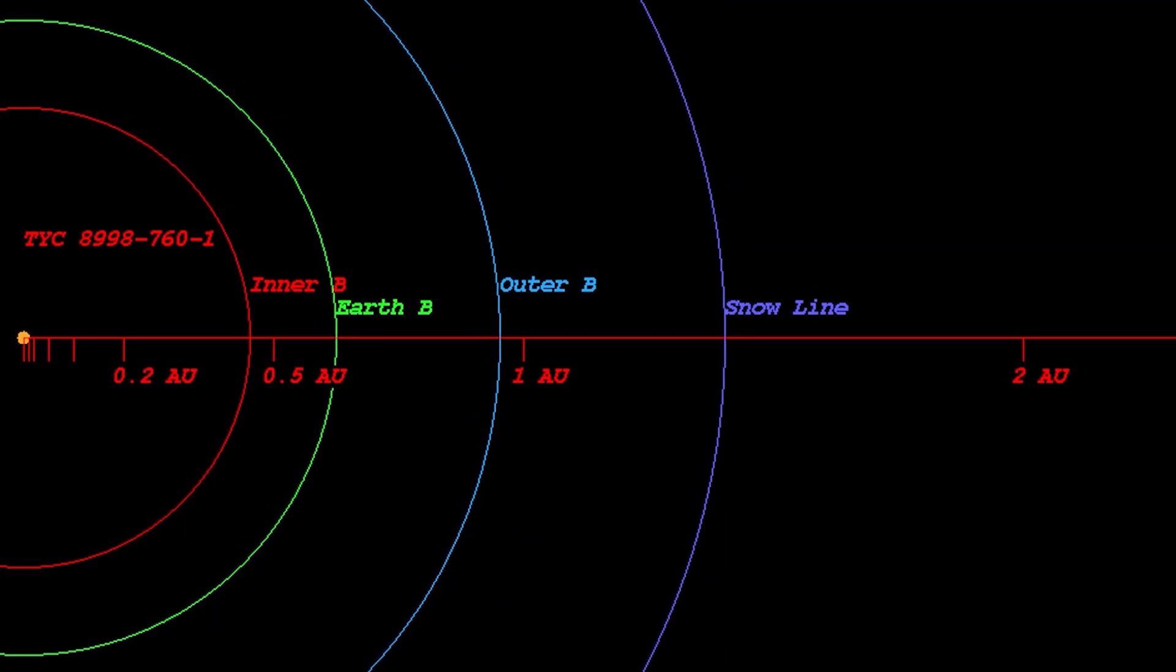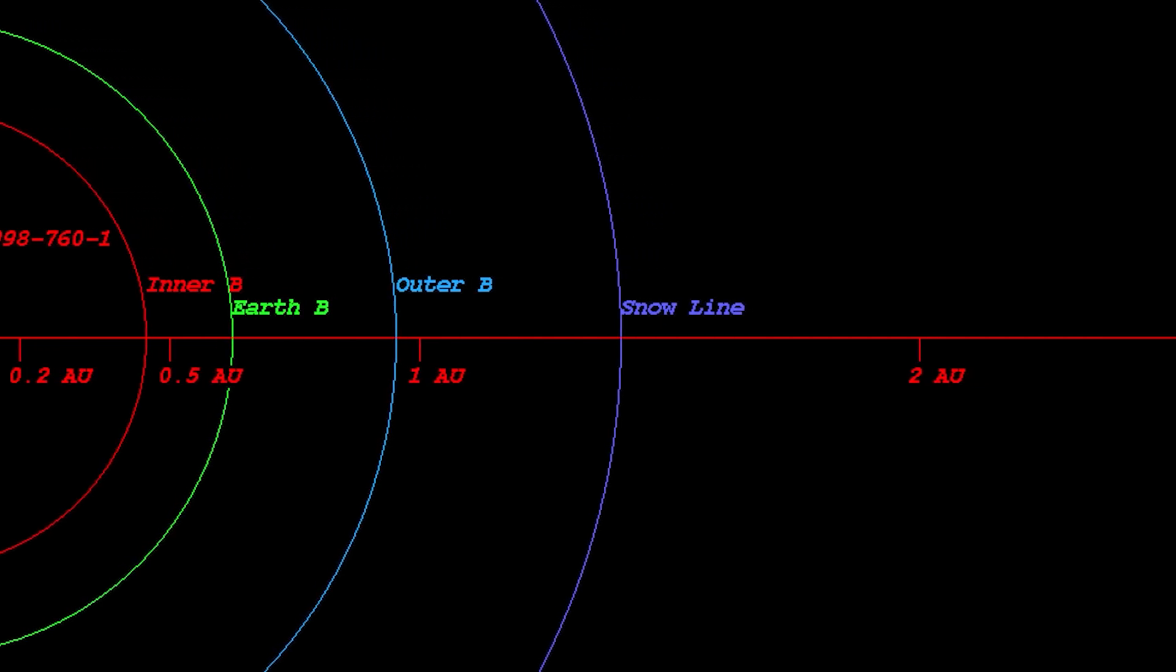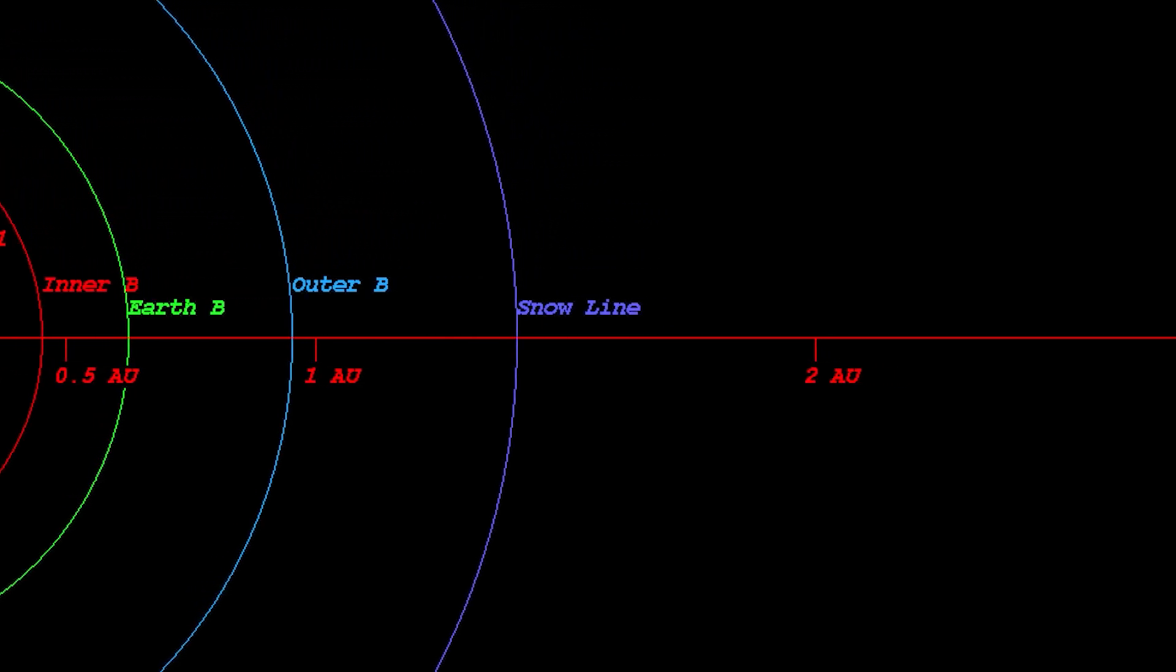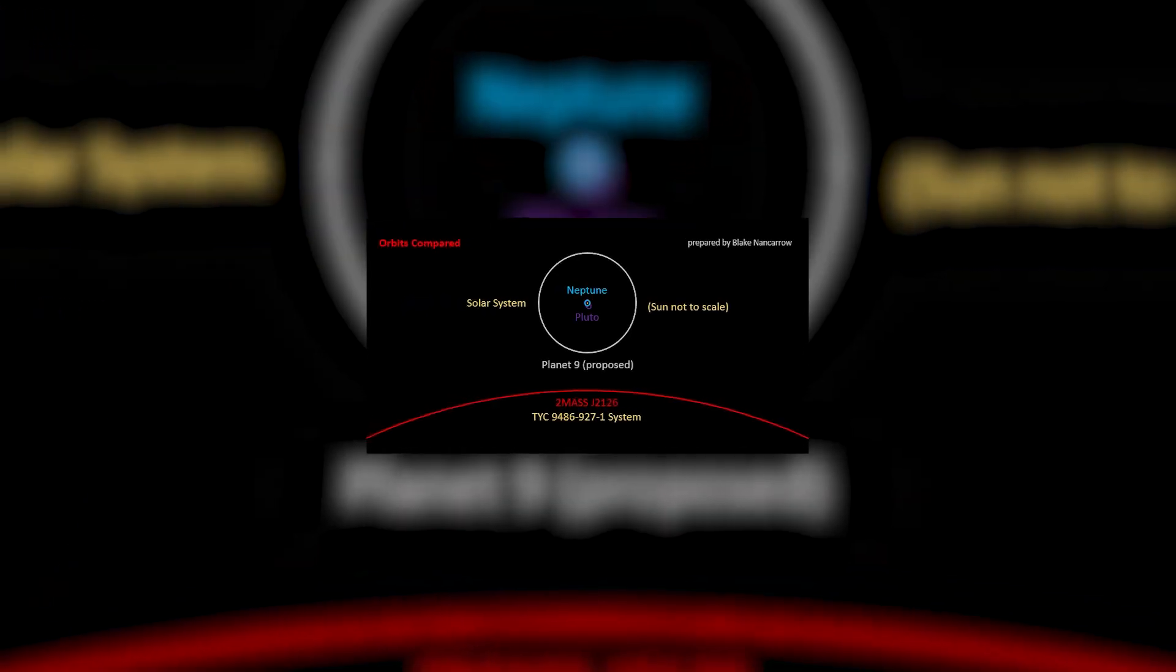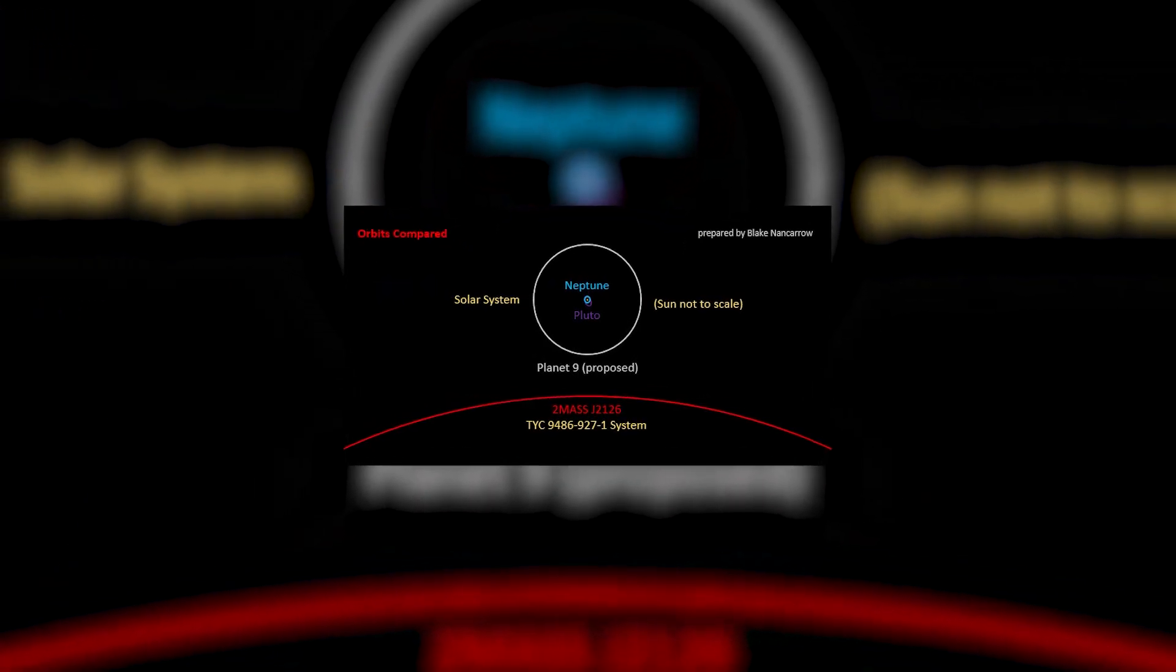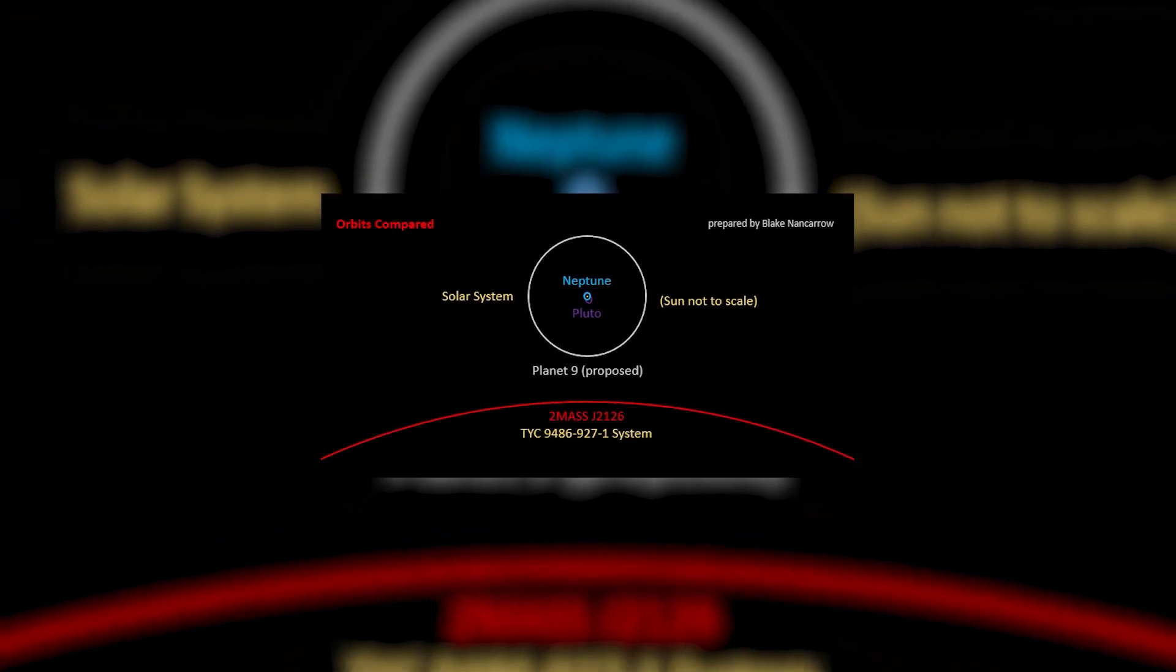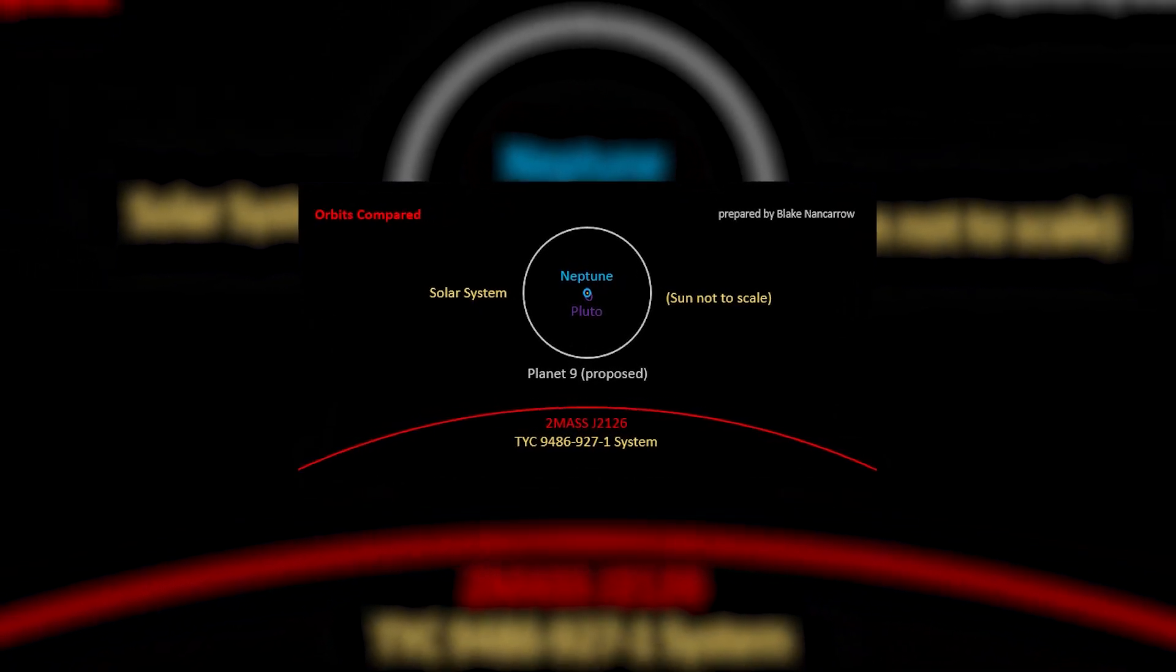More observations revealed that this planet orbits its star at a distance of 1 trillion kilometers, about 7,000 times farther than Earth is from the Sun. That's the largest orbit we've found for any known planet, and a year on this exoplanet is equal to around 900,000 Earth-years.